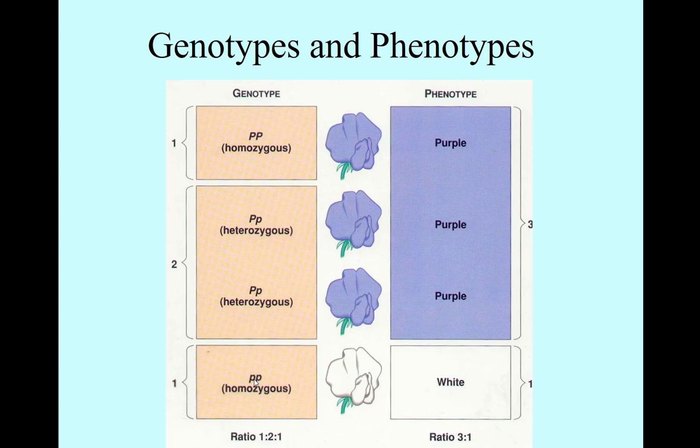In the homozygous recessive condition, there is no dominant allele to mask the recessive alleles, and the recessive alleles give their specific trait, which is a white flower.